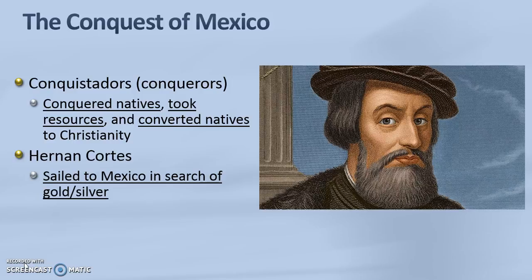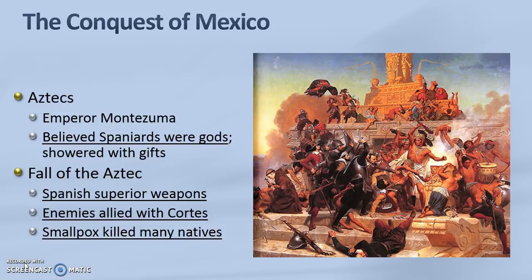One of these Spanish explorers is Hernan Cortes. He sails to Mexico in search of gold and silver. When Cortes arrives in Mexico he finds that the Aztec are living there, and at the time Montezuma was the emperor in power. When the Aztecs saw the Spaniards for the first time they actually thought that they were gods. They had never seen a light-skinned man before, they had never seen horses or these great ships and weapons, and so they confused them for gods and started showering them with gifts.